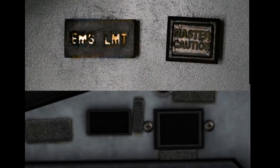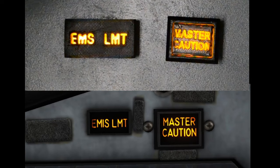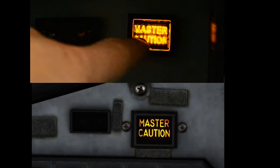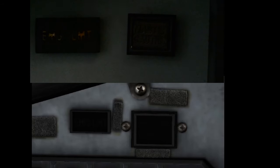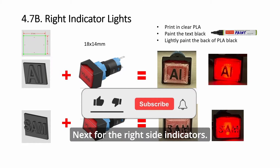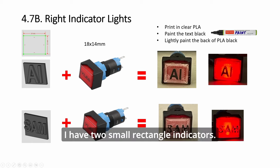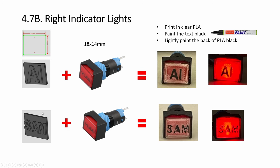Now let's take a look at the right side indicators. Starting with this one - I have two small rectangle indicators. Let's stack them together for the AI and SAM.